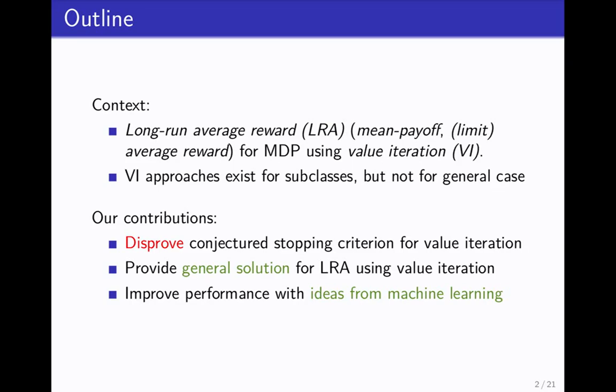First I'm going to tell you about what you have to expect and why you should pay attention. What we're trying to solve is the problem of long-run average reward on MDPs using value iteration. Some of you may know long-run average reward under the name of mean payoff or limit average reward. It's actually a quite old problem, but it turns out that value iteration approaches actually only exist for subclasses but not for the general problem.